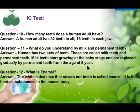After milk teeth fall out, stronger teeth grow in their place, which are known as permanent teeth. This second set of teeth has 32 teeth. Milk teeth number 20, while permanent teeth number 32. Permanent teeth are with us for our whole life if we take care of them properly.